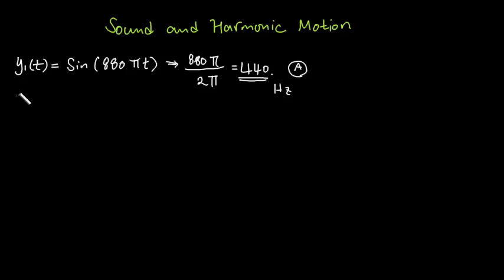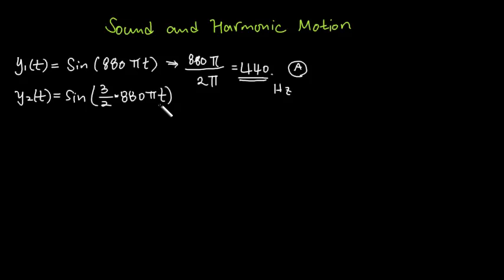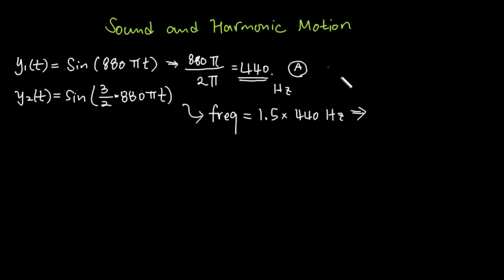Now let me consider the second function. It looks a lot like the earlier function, except it has a 1.5 ratio multiplied to the coefficient. The frequency is going to be exactly 1.5 times 440 Hz. If you use your tuner and look at it, this note is a fifth interval above — the musical note E. The relationship between these two musical notes, the interval, is known as the perfect fifth.